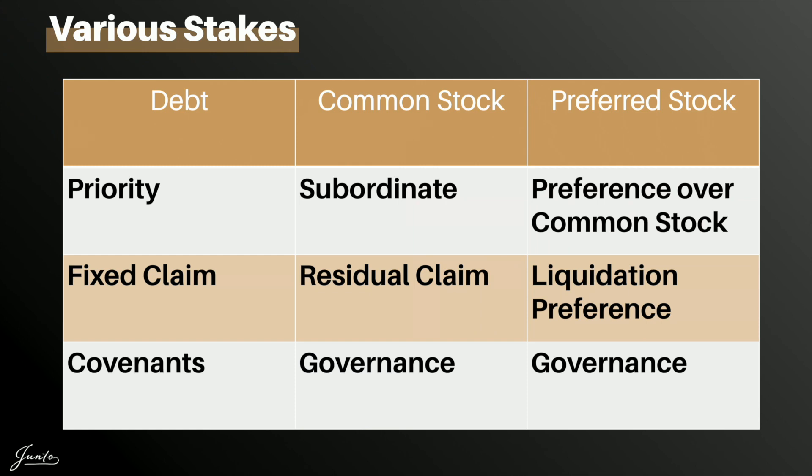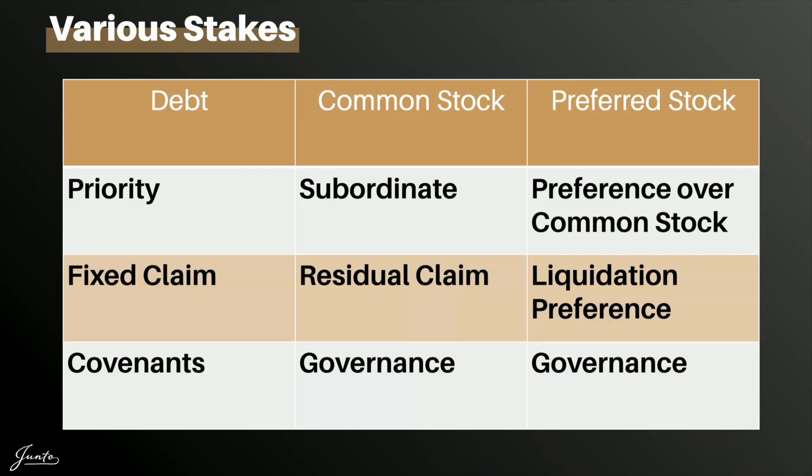Lenders watch over their investment very differently than owners or investors. They dictate terms by contract through loan documents called covenants. These might be affirmative covenants — things a company must do — or restrictive covenants — things a company cannot do. They might also be tied to certain economic or financial metrics the company must maintain. In summary, debt involves fixed rights, safe bets, priority claims, and general restrictions.